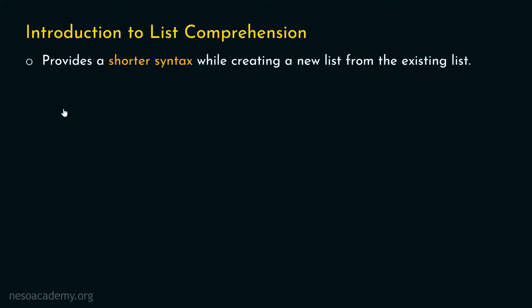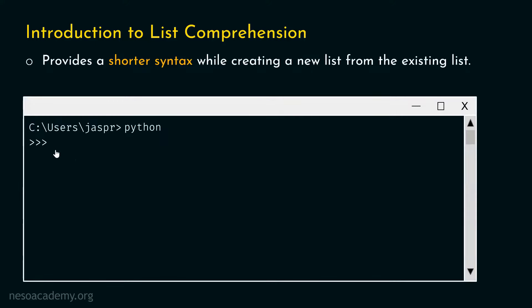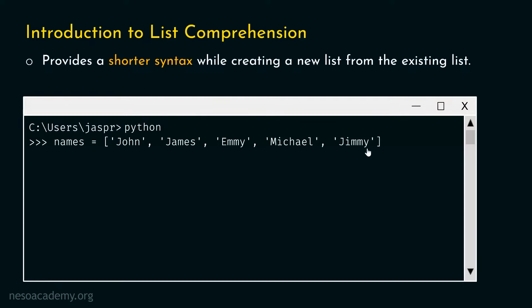Let's open our command prompt and activate the Python interactive shell. Let's type: names = ['John', 'James', 'Emmy', 'Michael', 'Jimmy']. So in total we have five items in this list. Let's say we want to create a new list from this list which consists of names containing the letter capital J — we want John, James, and Jimmy in the new list.